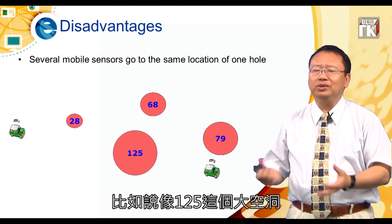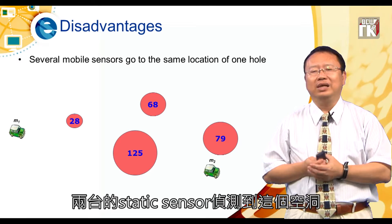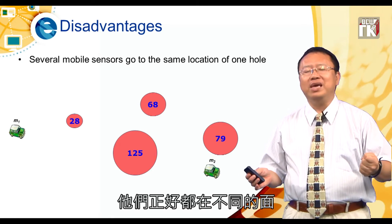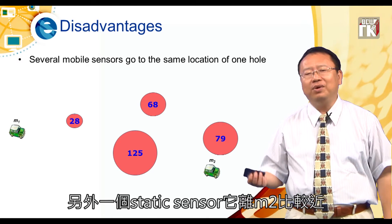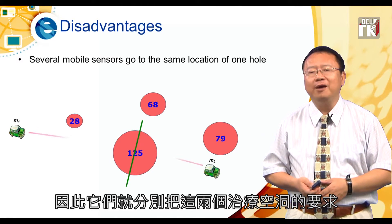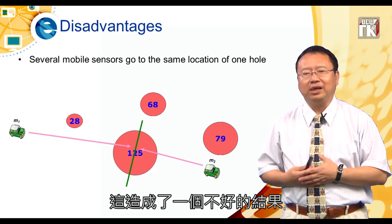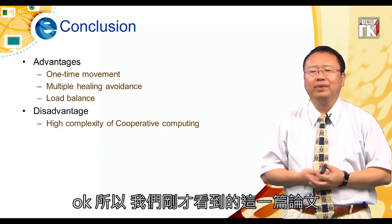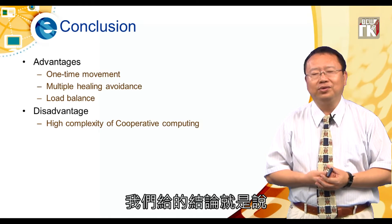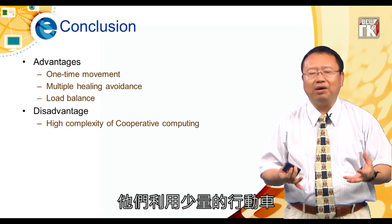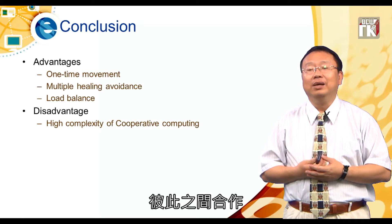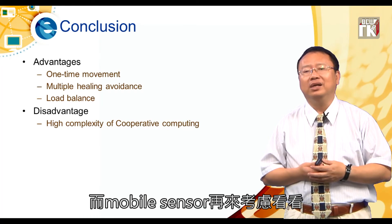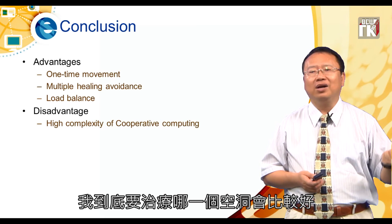第二个缺点是：比如125这个大空洞，可能有两个Static Sensor侦测到它，而这两个Static Sensor恰好分别离M1和M2比较近，因此分别把请求传给M1和M2，造成两台车子通通都跑过来治疗同一个空洞，产生工作重复的问题。